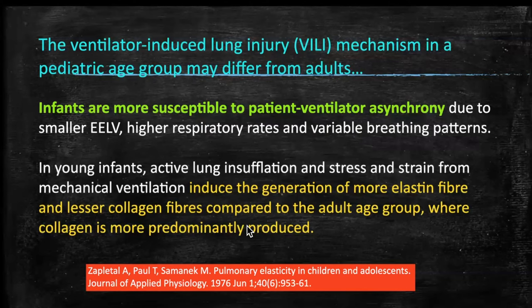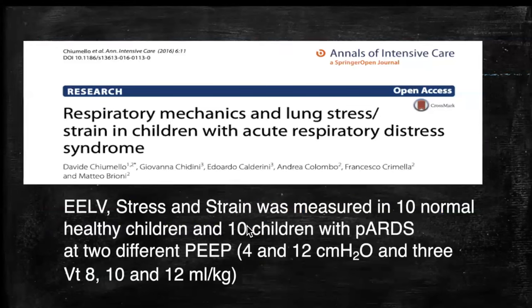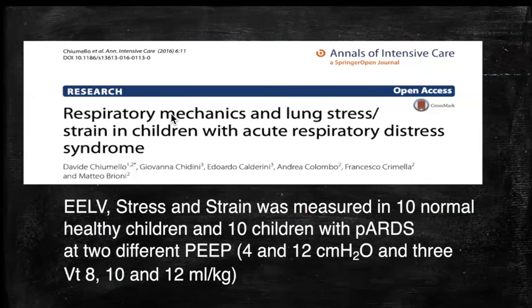Infants also react to inflammatory situations differently — inducing more elastin fiber production compared to older children or adults, where collagen fiber production predominates. The only study on pediatric stress and strain published so far was by Chimula et al in 2016, the same group that published the famous adult stress and strain study in 2008.